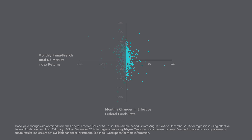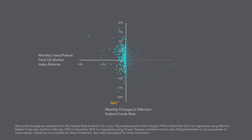In months when rates rose, equity returns were as low as negative 15.6% and as high as 14.3%. In months when rates fell, the range of equity returns was just as wide, from negative 22.4% to 16.5%. The relation between longer-term rates and equity returns is also noisy.